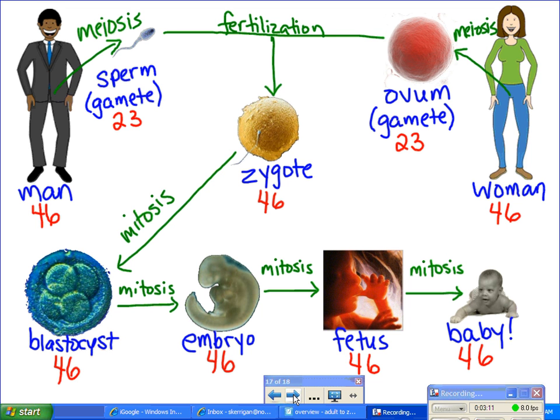When this baby grows up, he would also go through meiosis, make sperm cells with 23 chromosomes, and the cycle could continue.